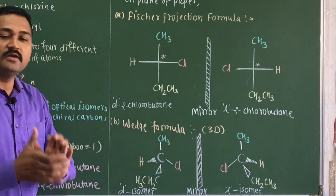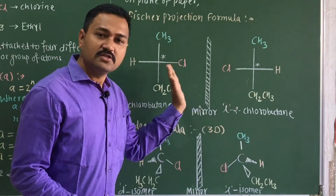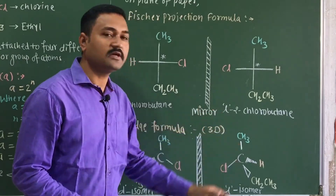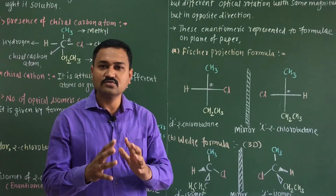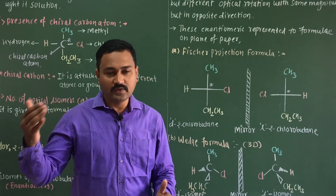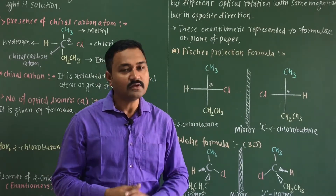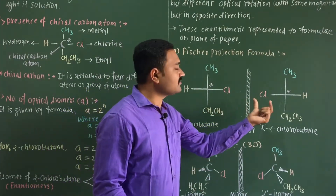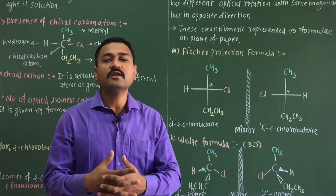To differentiate the two isomeric forms, we place a mirror in between the two isomers. Just as when we stand in front of a mirror, our left hand appears as the right hand and our right hand appears as the left hand — these are the two different enantiomeric forms of 2-chlorobutane.